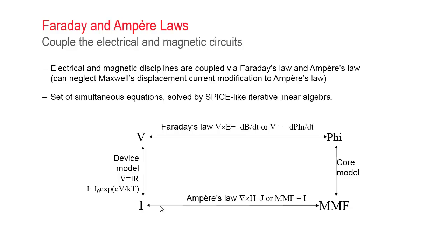The current, the applied current in the coil, is coupled to the magnetomotive force using Ampere's law. The magnetomotive force is simply current times N, the number of turns in a coil.